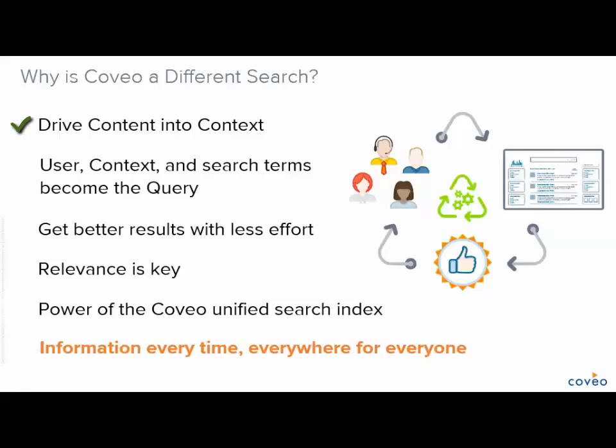Otherwise, users will have a tendency to write overly wordy searches to compensate for the lack of context, like full sentence search, which Coveo fully supports. But by leveraging a clearly defined context, users get the benefit of getting better results with less effort because they can be more precise with a minimal number of search terms.